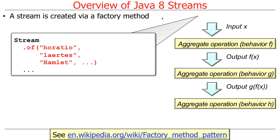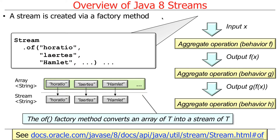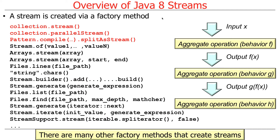How do you get a stream in the first place? A stream is typically created by something called a factory method — hopefully you remember the factory method pattern from design courses. We have Stream.of() and we just list out the names. What happens under the hood is we take this array of strings, and that's converted by the of() operation into a stream of strings. The of() factory method converts an array of type T — in this case T is String — into a stream of T. There are lots of other ways to make streams: stream(), parallelStream(), splitAsStream(), Stream.of(), and about a dozen others.